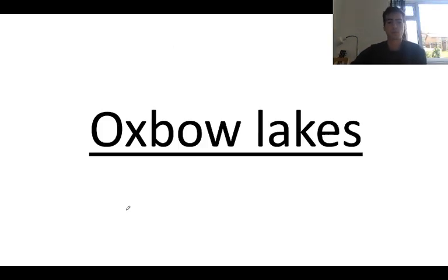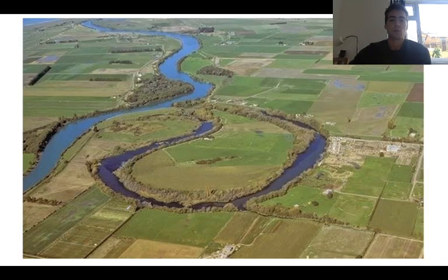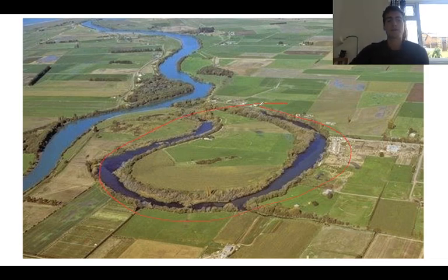The next landform is Oxbow Lakes, and these link in massively to meanders – very similar in their initial formation. An Oxbow Lake is this feature here. You can see it is not attached to the river, but it would have been in the past.